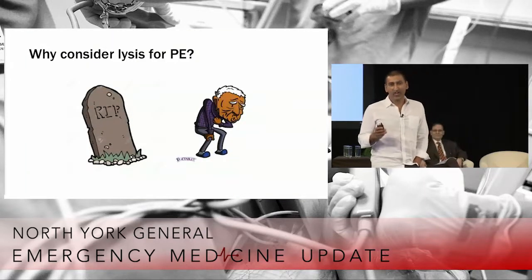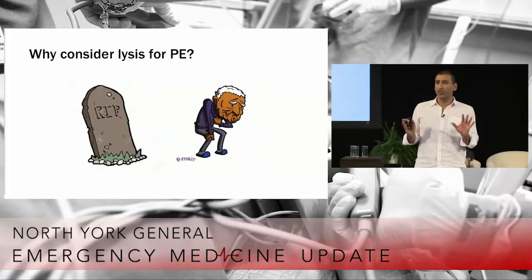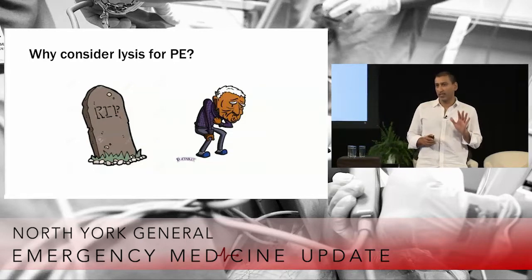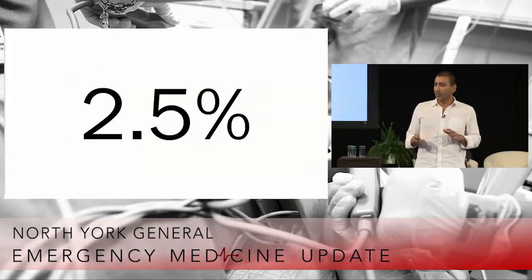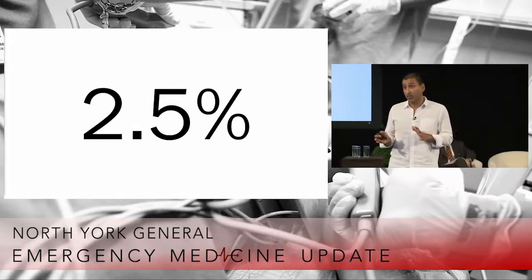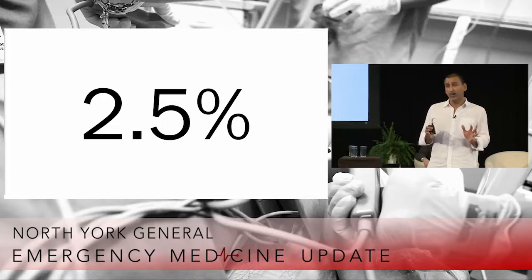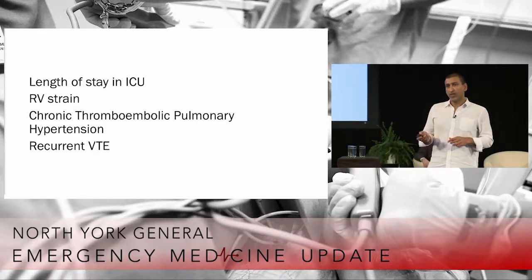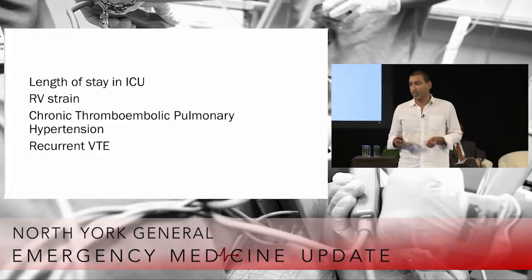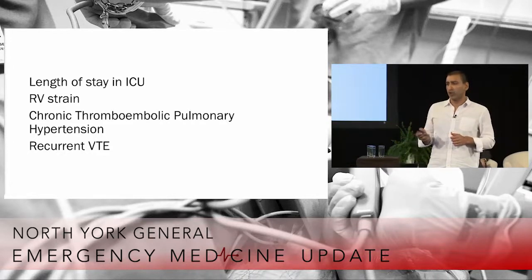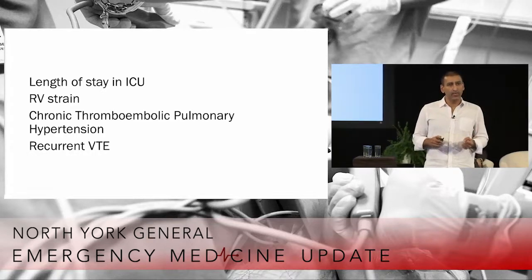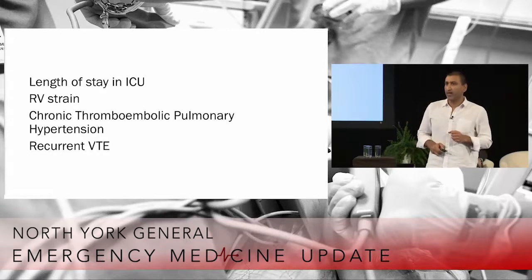So why do we consider lysis for PE? When looking at all this literature, keep in mind there are really just two reasons why we want to give someone a thrombolytic during their PE: we'd like to prevent death, and we'd like to prevent dyspnea. When talking about preventing death, only about 2.5%, or 1 in 40, maybe 1 in 30, patients with a submassive PE actually go on to die. So we're pretty good, even with no thrombolytic therapy, at treating these patients. There are surrogate markers — length of stay in ICU, RV strain, chronic thromboembolic pulmonary hypertension, recurrent VTE — that can be impacted by thrombolytics. But really, we're trying to prevent the patient either from dying or having chronic shortness of breath a year or two later.